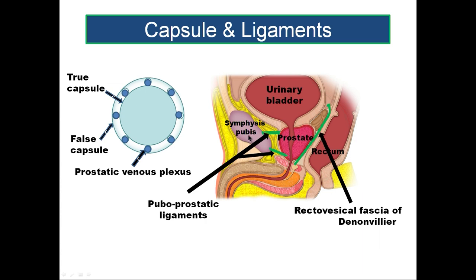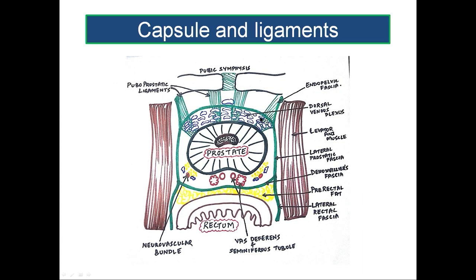Here we can see the capsule of the prostate becoming continuous anteriorly with the puboprostatic ligaments and posteriorly with the fascia of Denonvilliers, merging with these two structures. Inferiorly it merges with the superior fascia of the urogenital diaphragm. In between the fascia of Denonvilliers and the levator ani you will find a fascial sheath.